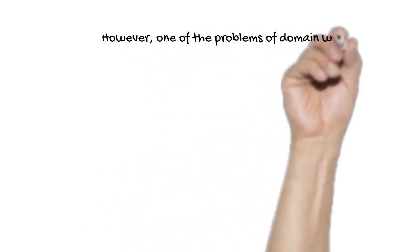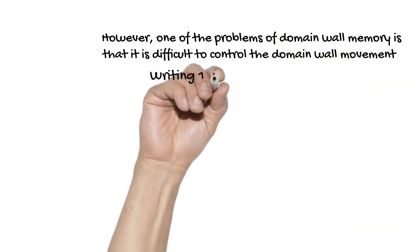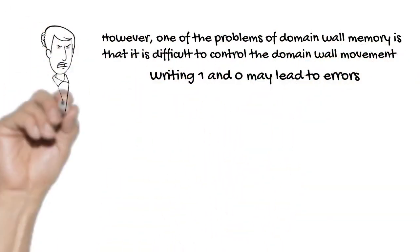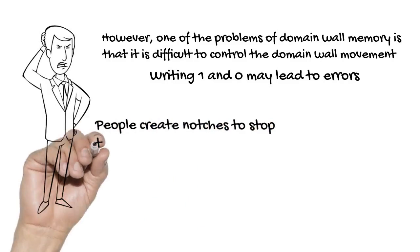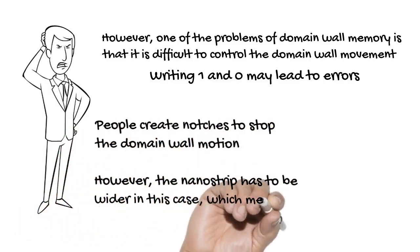However, one of the problems of domain wall memory is that it is difficult to control the domain wall movement. Writing 1 and 0 may lead to errors. People create notches to stop the domain wall motion. However, the nanostrip has to be wider in this case, which means less density.